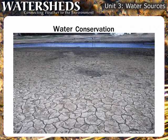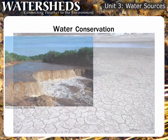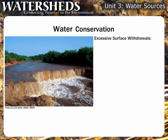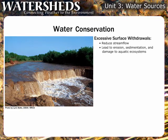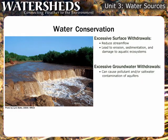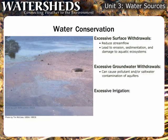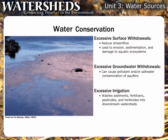Since surface water supplies are limited and groundwater supplies are shrinking in many areas, water conservation has become a necessity for many communities. Overuse affects water quality as well. Excessive surface withdrawals reduce stream flow, resulting in erosion, sedimentation, and damage to aquatic ecosystems. Excessive groundwater withdrawals can cause pollutants and/or saltwater to be drawn into aquifers. Excess irrigation washes sediments, fertilizers, pesticides, and herbicides into downstream watersheds.